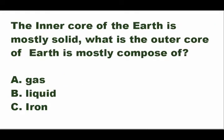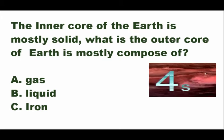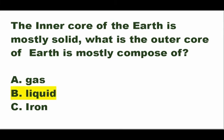Next question: the inner core of the earth is mostly solid — what is the outer core of the earth mostly composed of? Is it A — gas, B — liquid, or C — iron? The answer is letter B — liquid. The inner core of the earth is mostly solid and the outer core is mostly liquid.